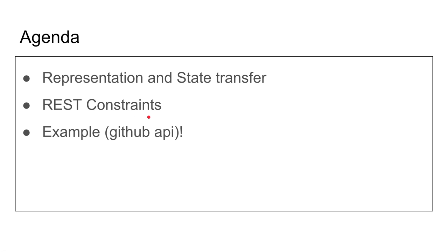We're going to talk about REST constraints — what are the constraints defined by Fielding, and what essentially makes an API REST? He says you can make any API, but don't call it REST — call it RPC — if it's not actually REST. He gets really mad when you call your API REST when it's not. We're going to talk about what I believe is a truly RESTful API based on all those constraints.